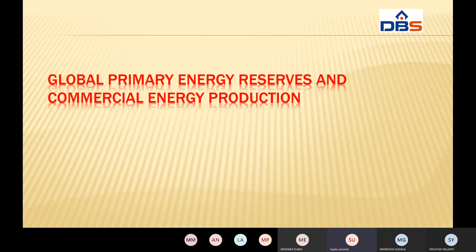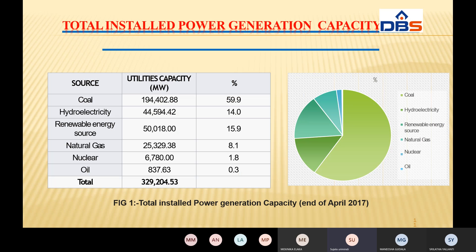There are global primary energy resources and commercial energy resources. We know that coal, oil, gas, hydro, and thermal are among the global primary energy resources. The total installed power generation capacity covers coal, hydroelectricity, renewable energy, natural gas, nuclear, and oil. For each source — coal, hydro, renewable, natural gas, nuclear, and oil — there is a utility capacity and a corresponding percentage of total installed power generation capacity.